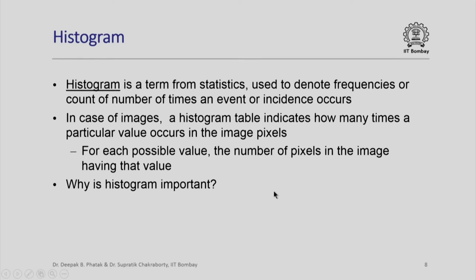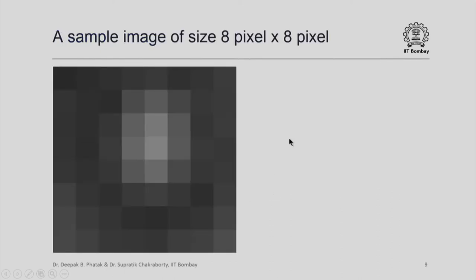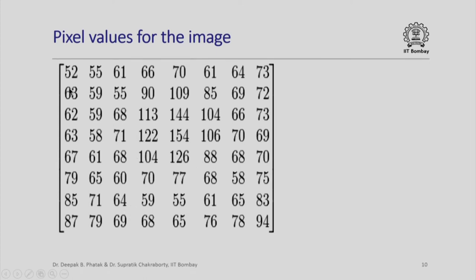Why is histogram important? Let us look at an example. Here is a sample image of size 8 pixels by 8 pixels — it is obviously an artificial image. A pixel is shown as a very big square thing. Notice the different shades of gray. The brightest pixel is not pure white and the darkest is not pure black, so this is an image with very low contrast. Observe that these pixel values are stored in an 8×8 matrix. The smallest pixel value is 52, not 0, and the largest is 154, not 255. This is one of the reasons why the contrast of this image is poor.